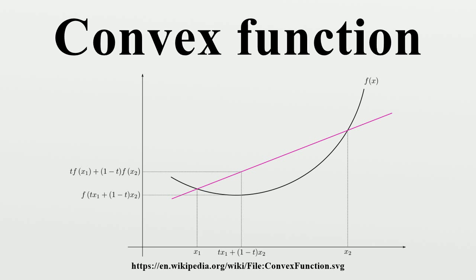If a function is differentiable and convex, then it is also continuously differentiable. For the basic case of a differentiable function from the real numbers to the real numbers, convex is equivalent to increasing at an increasing rate. A continuously differentiable function of one variable is convex on an interval if and only if the function lies above all of its tangents, for all x and y in the interval. In particular, if f prime equals zero, then c is a global minimum of f. A twice-differentiable function of one variable is convex on an interval if and only if its second derivative is non-negative there. This gives a practical test for convexity.